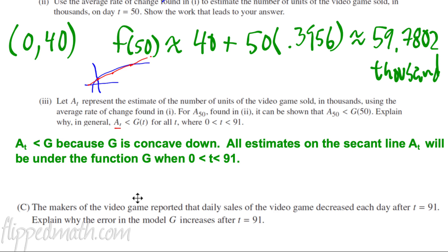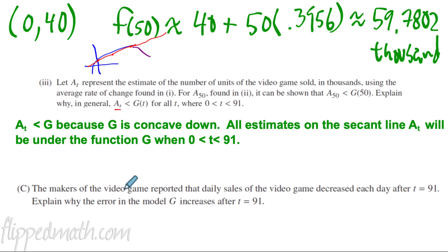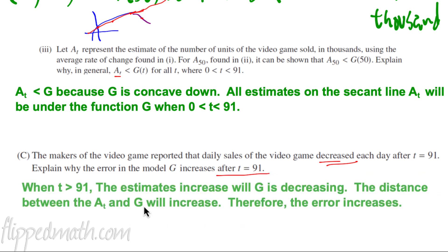Now, part C. The makers of the video game reported the daily sales have decreased after T equals 91. So, they're saying this logarithmic function, but after 91 actually started decreasing. I'm going to do my best there. But we'll get rid of that. And it actually started decreasing. But guess what? That estimate line is still going up. So, the question is, explain why the error in model G increases after T equals 91. Well, the error is the difference between the function, which is right here, and the estimate, which is up there. Now, notice the estimate is always increasing. And the function is now, at this point, based on what they told us right here in this question, after 91, it is decreasing. So, if the function is decreasing and the estimate continues to increase, then our error is just going to grow because one's going up and the other one's going down.